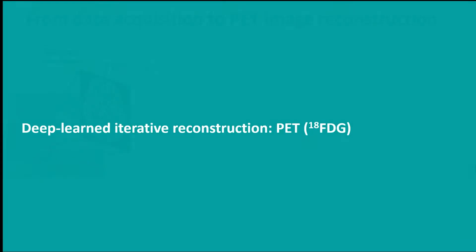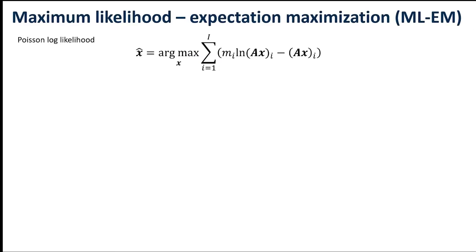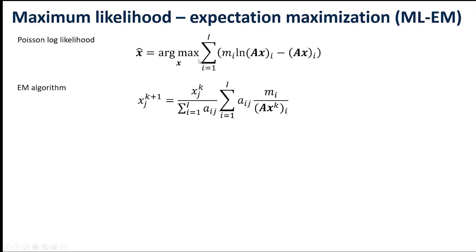Moving on to deep-learned iterative PET reconstruction. With PET, we collect sinograms — maybe 1,000 such sinograms from an MMR scanner — and we're seeking to do 3D reconstructions. One of the core methodologies is the Poisson log likelihood objective function, because we're dealing with Poisson distributed noisy data. We use the well-known expectation maximization algorithm to maximize that Poisson log likelihood with a sequence of iterates that effectively maximize a surrogate function — a conditional expectation of the complete data log likelihood.